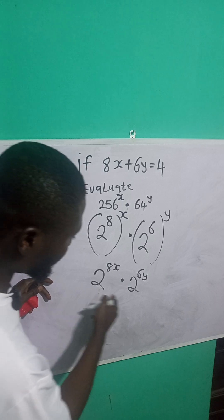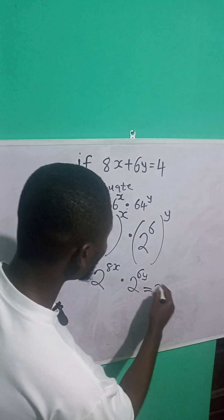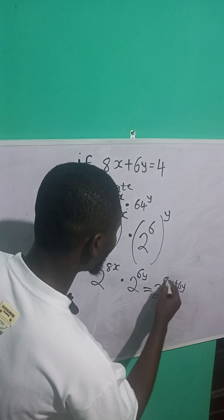Now because they have the same base, you can pick one of the bases and add up the powers since you are multiplying. So this is what? 2 raised to power of what? 8x plus 6y, right?